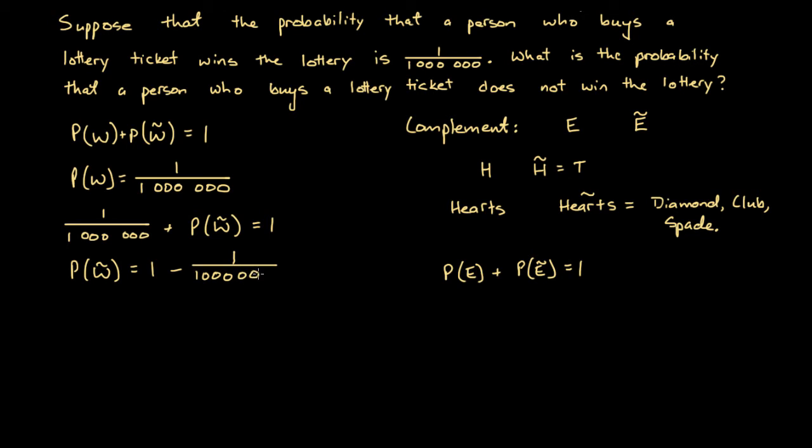And we can rewrite this one here as a million over a million, such that we get a common denominator. So we could write this as a million over a million minus one over a million.